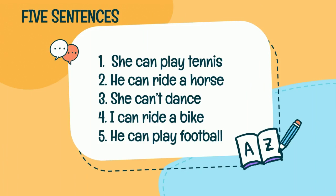Five sentences about this material. Number one: She can play tennis. Number two: He can ride a horse. Number three: She can't dance. Number four: I can ride a bike. Number five: He can play football.